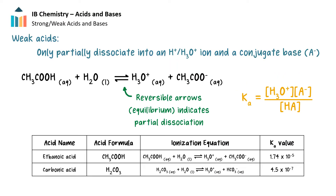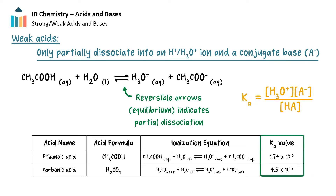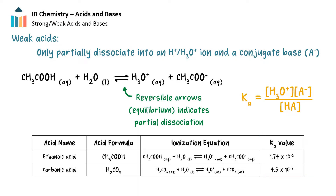Now let's contrast a few weak acids and a few weak bases. Weak acids only dissociate partially into their constituent ions. Hence, the Ka values for weak acids are less than 1, indicating that the equilibrium position for the ionization of the weak acid contains reactant in a significant amount. Therefore, much less hydronium ion is generated by a weak acid compared to a strong acid. The ionization equations are shown with two-way arrows, indicating that both reactant and product are present at equilibrium.